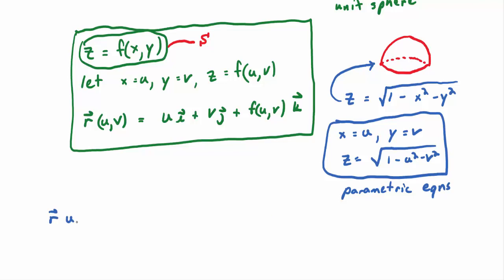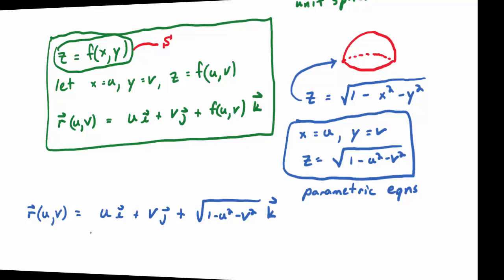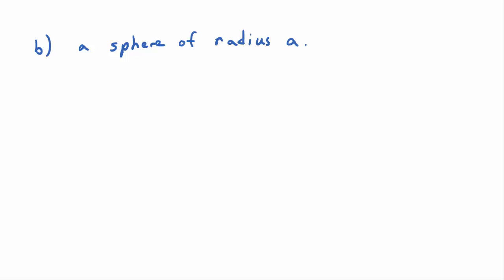If you want to describe it as a vector-valued function R(U,V), you write: R(U,V) = U·I + V·J + √(1 − U² − V²)·K.